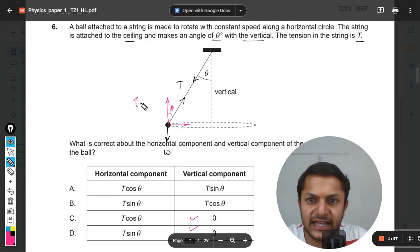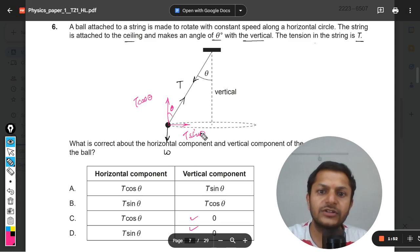Clearly this T can be divided into two components as T cos theta and T sin theta, and this is weight W.